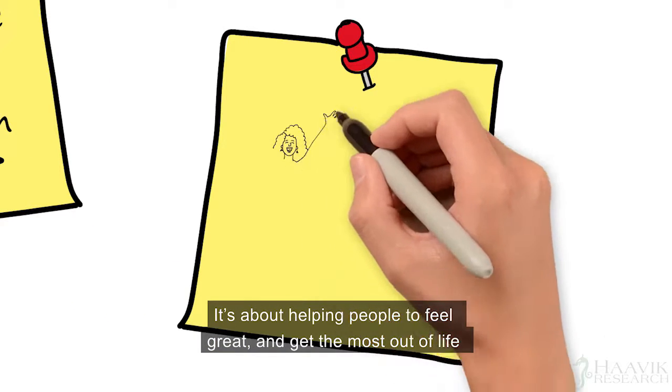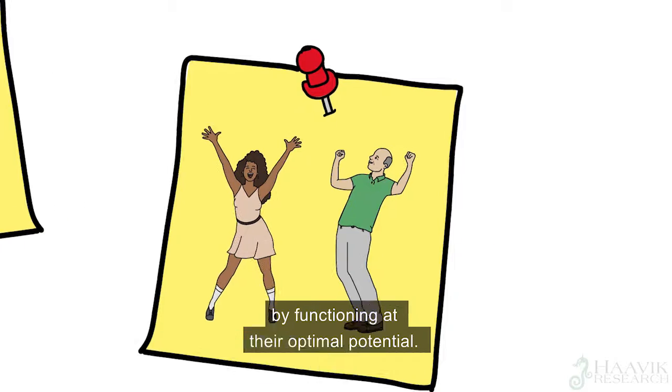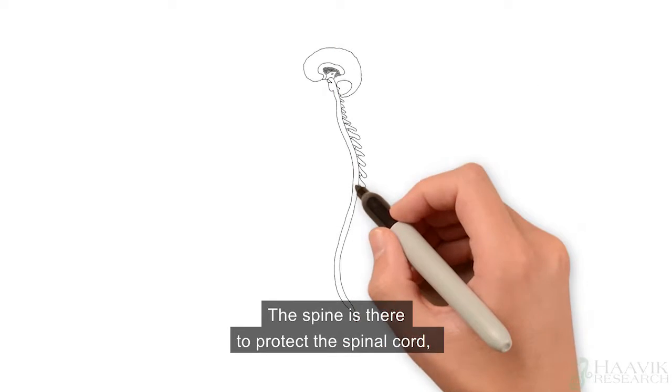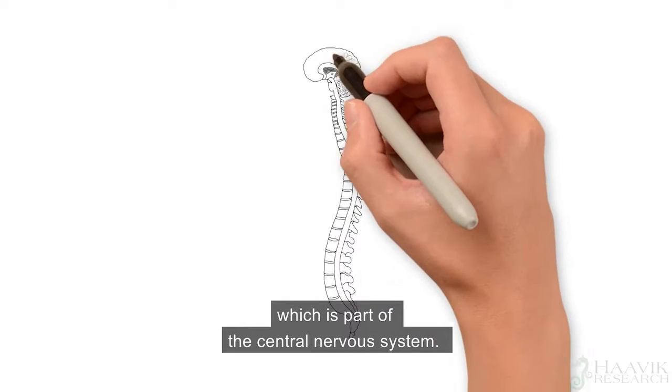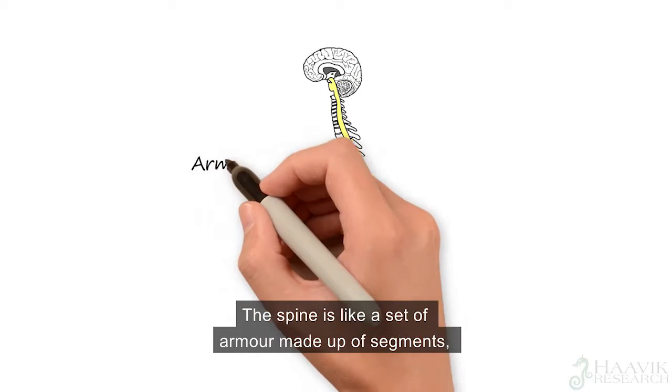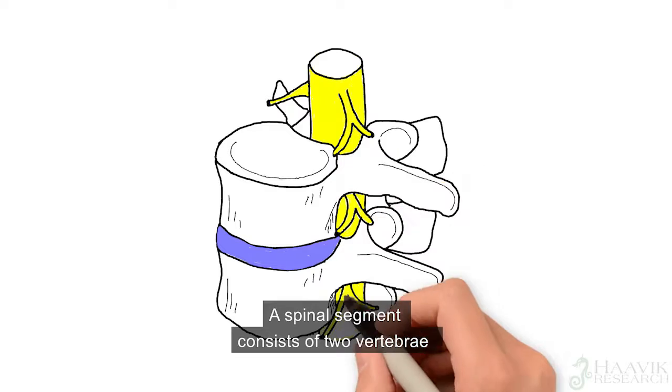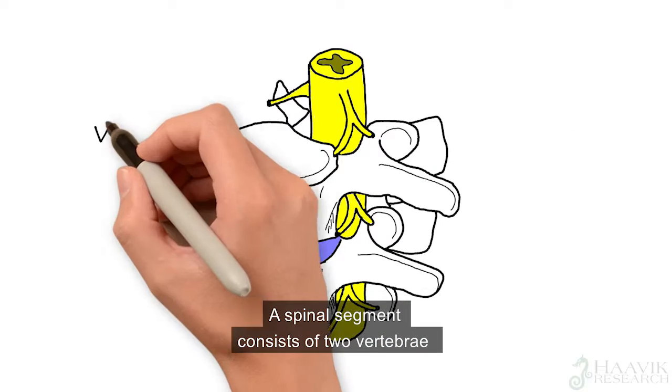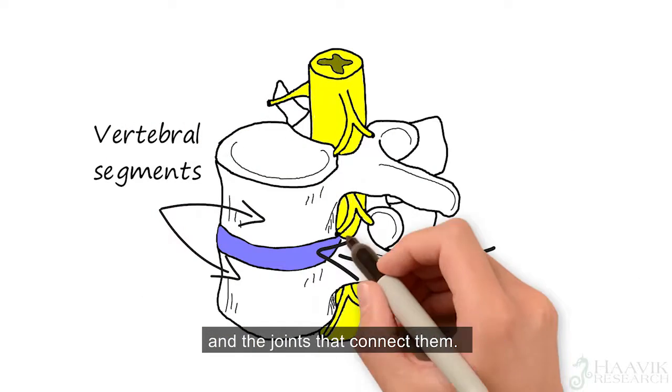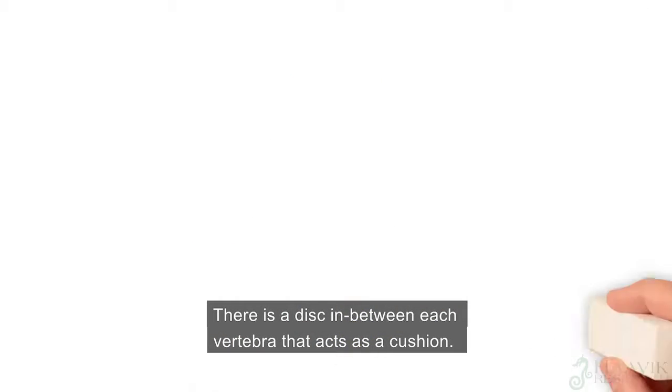The spine is there to protect the spinal cord, which is part of the central nervous system. The spine is like a set of armor made up of segments so that it can bend and move naturally with the body. A spinal segment consists of two vertebrae and the joints that connect them. There is a disc between each vertebra that acts as a cushion.